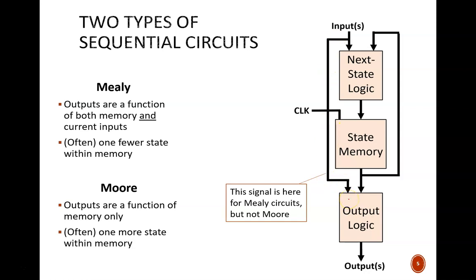Again, in a Mealy circuit, the outputs are a function of two things: the state memory and the current inputs. As we will see with later design examples, this distinction often results in a Mealy machine needing one fewer state in memory than a Moore machine.